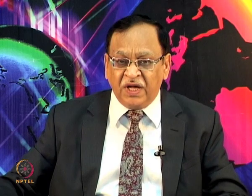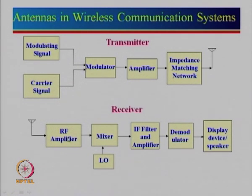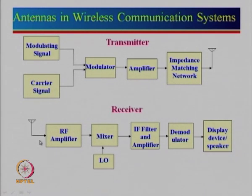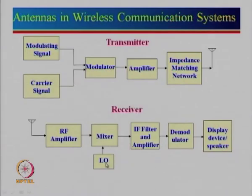Once the signal is transmitted, it is received by the receiver. The received signal is very weak, so it must be amplified by an RF amplifier. A band-pass filter is also required — either the antenna acts as a band-pass filter if it is narrowband, or one is added explicitly — to pass only the desired frequency band. The amplified signal is then down-converted using a local oscillator and mixer in a superheterodyne architecture, which is used in the majority of receiver systems.